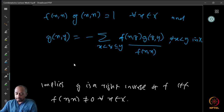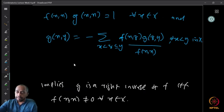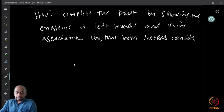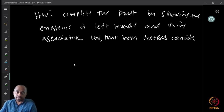Similarly you can show the other properties: if f had a left inverse then a similar idea works, and then using the associativity property we can also show it has a two-sided inverse. All these are equivalent to f(x, x) ≠ 0, because in that case we can define g this way. I want you to complete the proof as a homework — formally show the existence of a left inverse and then use the associative law so that the left and right inverses coincide.